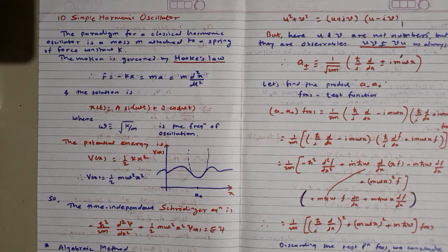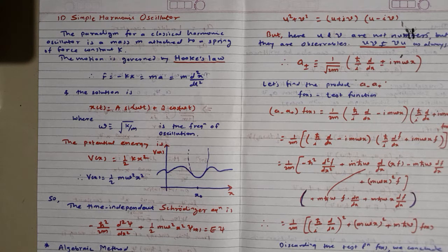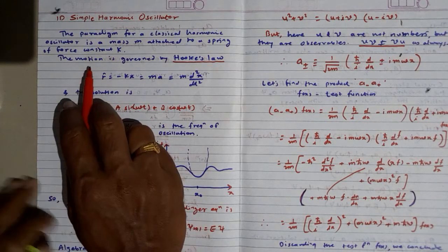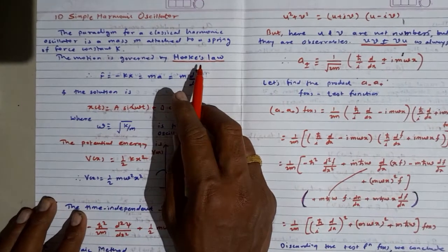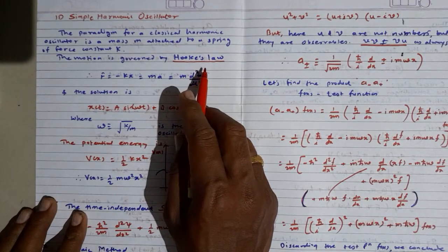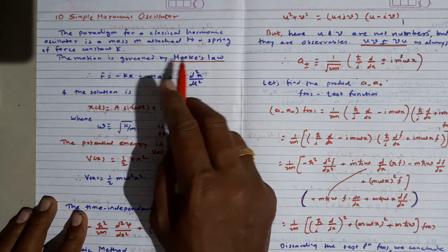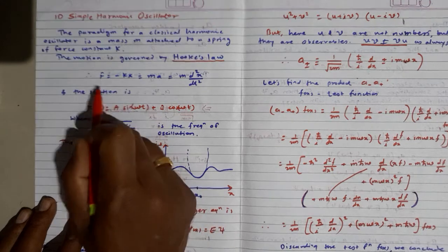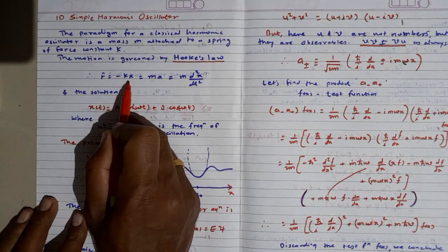The paradigm for the classical harmonic oscillator is a mass attached to a spring of force constant k. The motion of that simple harmonic oscillator is governed by Hooke's law: within the elastic limit, stress is directly proportional to strain, so F is equal to minus kx.